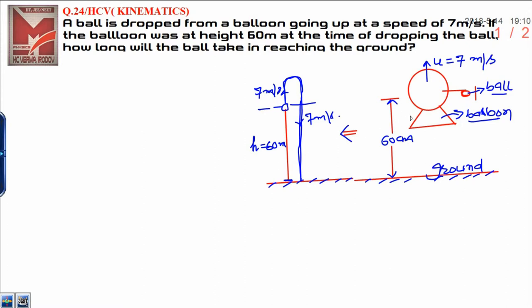Now, what is the basic concept behind this question? The concept is when the balloon is moving up, the ball is dropped from the balloon. It means at the time of drop, the ball will gain some velocity, that is the velocity of the balloon, that is 7 meters per second. That is why I have drawn this type of diagram. It will gain this speed and after that it will come back to the ground.